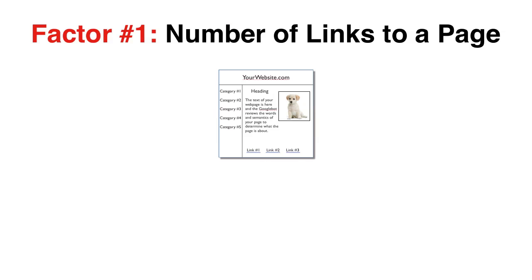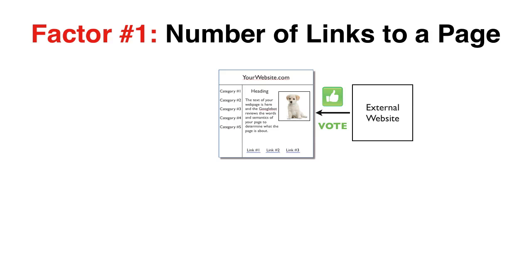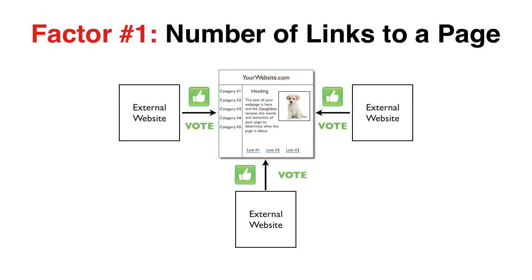The first factor that influences the rank of a page is the number of incoming links. A good way to think of this is that each link is like a vote of confidence. If a lot of other websites are linking to and thereby voting for a page, it suggests that the page contains good quality content.